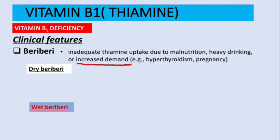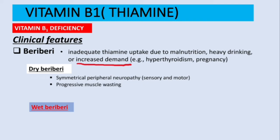Dry beriberi features include: symmetrical peripheral neuropathy (both motor and sensory), progressive muscle wasting, confusion, and paralysis. To remember dry beriberi, note these features are all associated with the nervous system — that's dry beriberi.